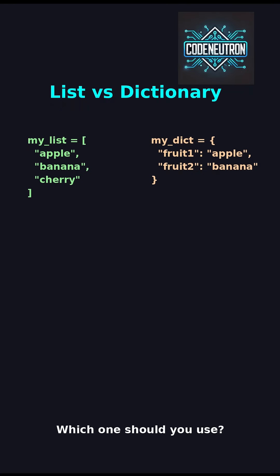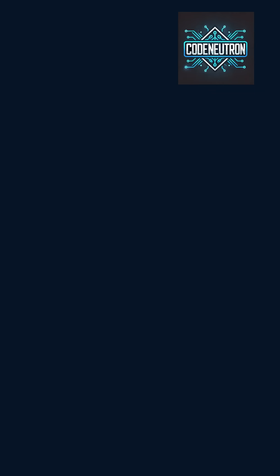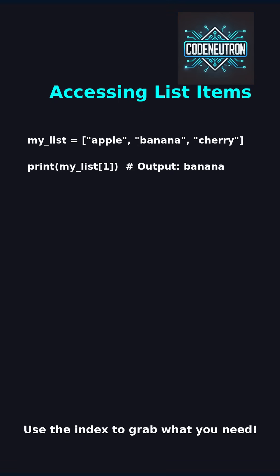Think of a list like a row of boxes, each with a number. You drop items in, and Python keeps track by index, starting from zero. To grab something from a list, just ask by its number. Like index one — that gives you banana.